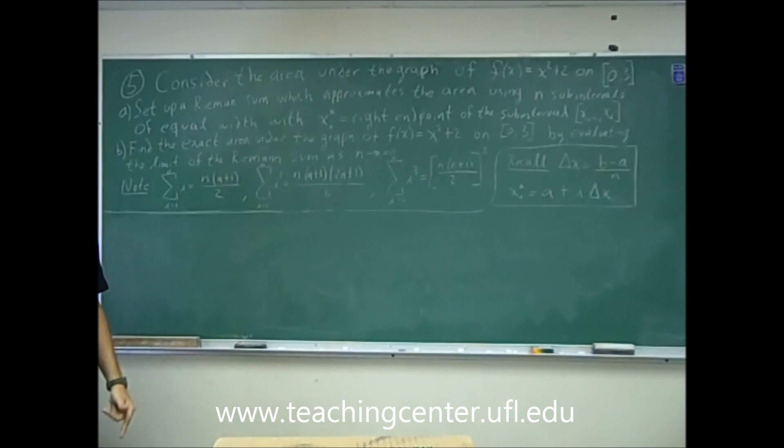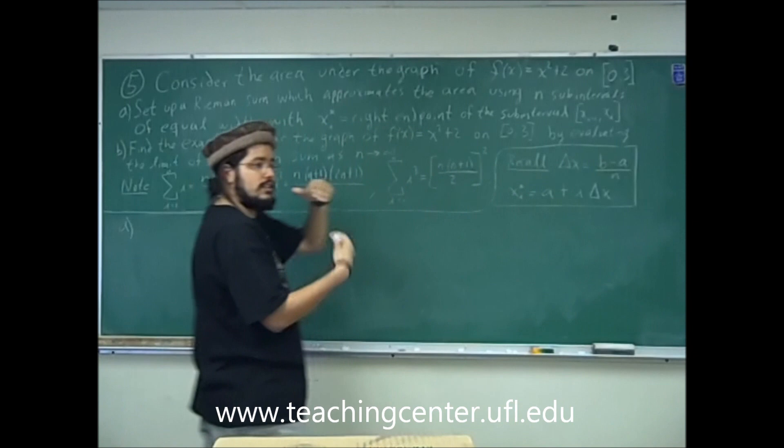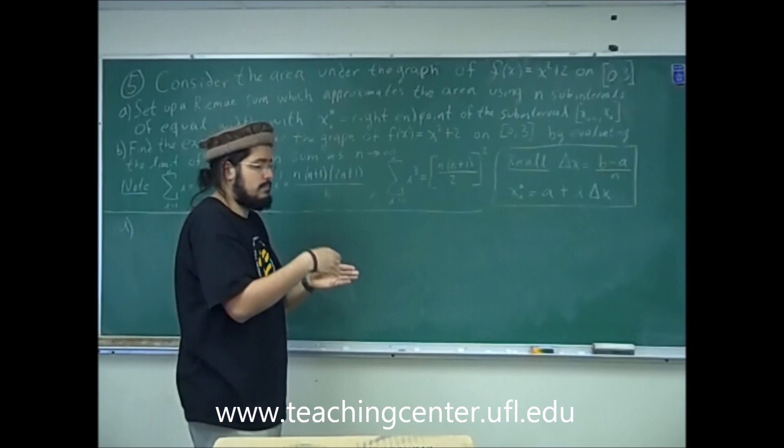So let's go ahead and start with part a. We need to find the Riemann sum. We're looking for the area under a curve, and we're using rectangles with right endpoints.